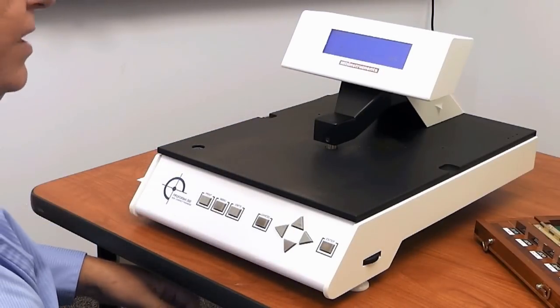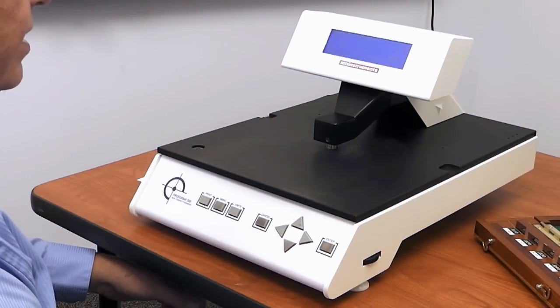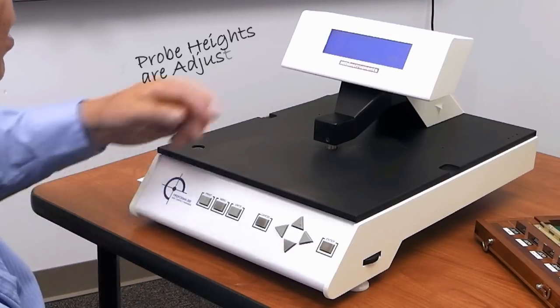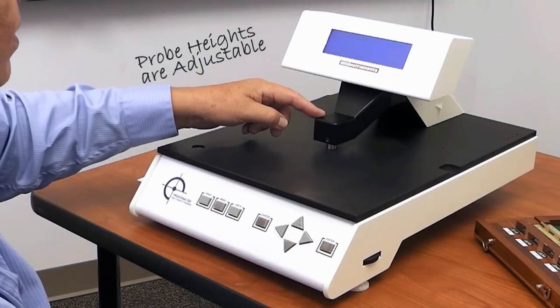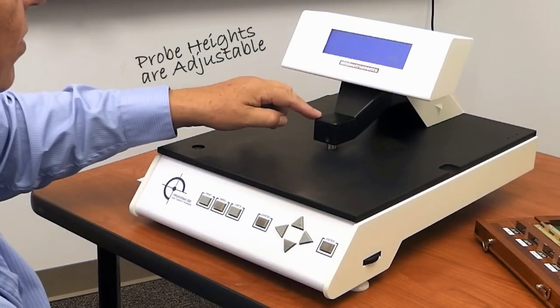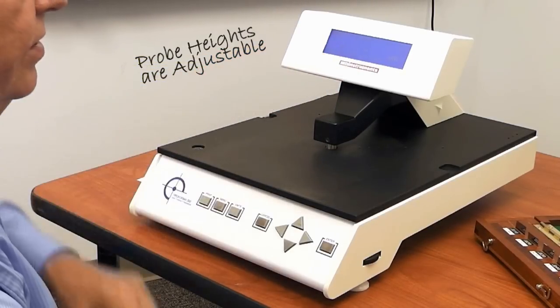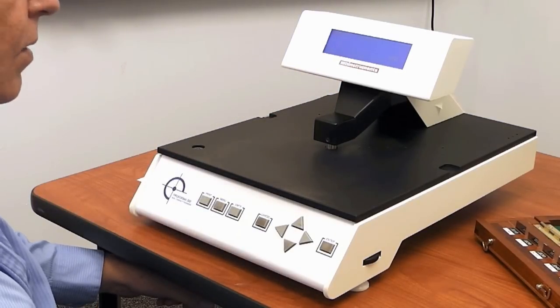The system is normally set up from the factory to cover a range of one millimeter. If, however, your samples fall out of this range, simply by removing this cover and loosening the set screw, there's an Allen screw adjustment that allows you to move the probe up and down to the specific thickness required.